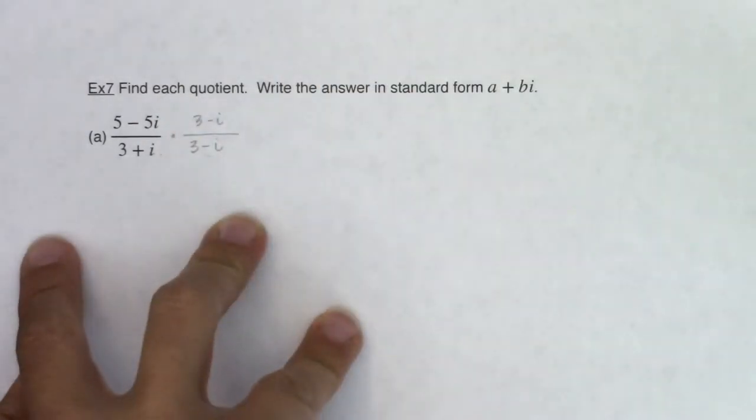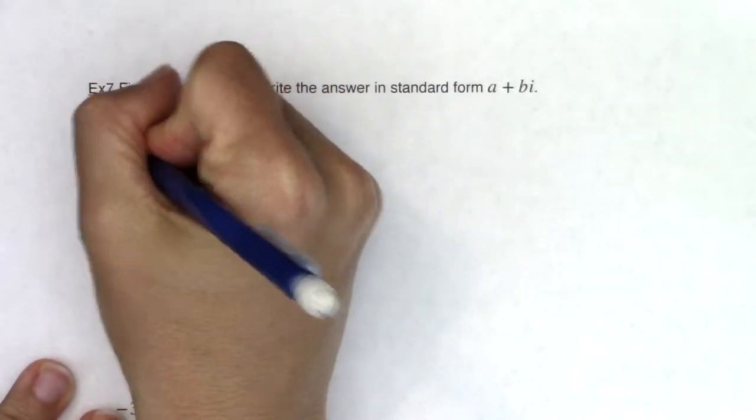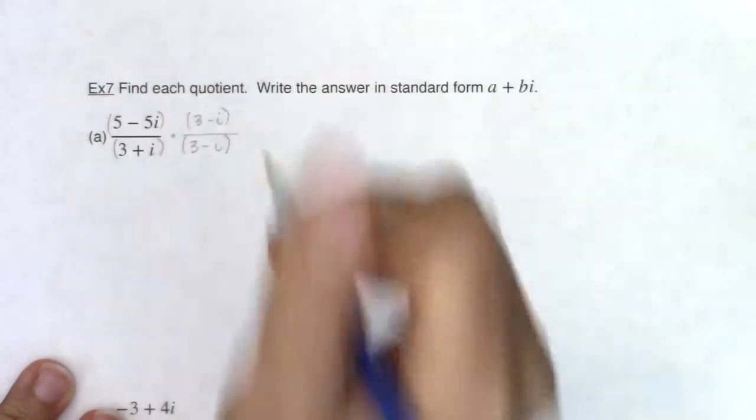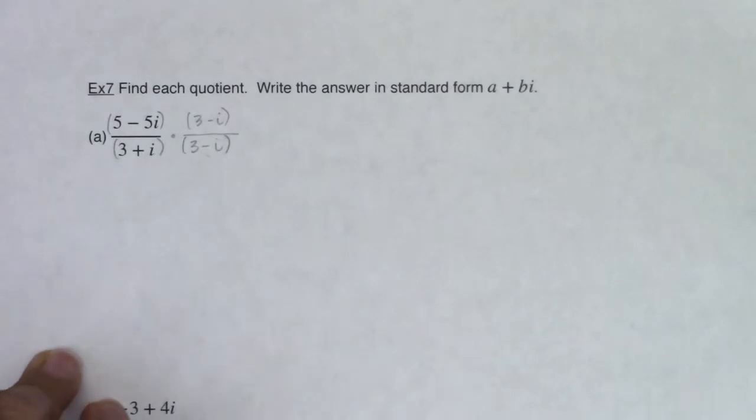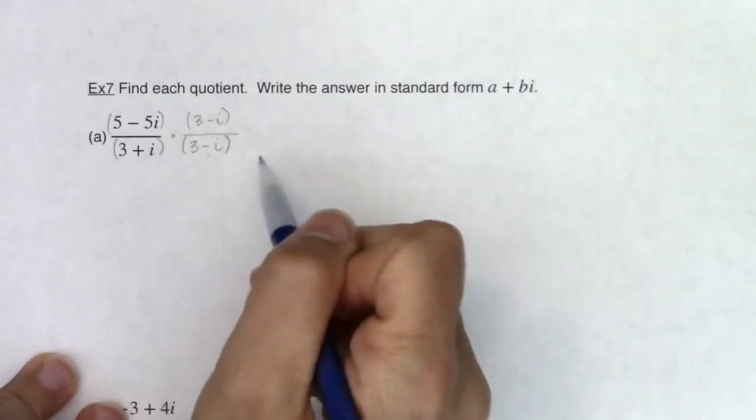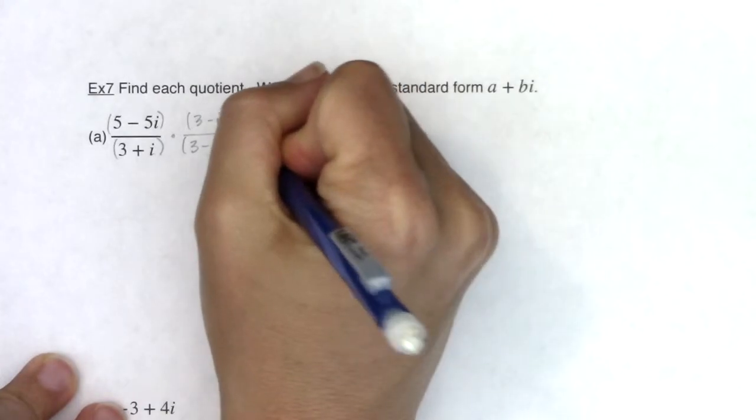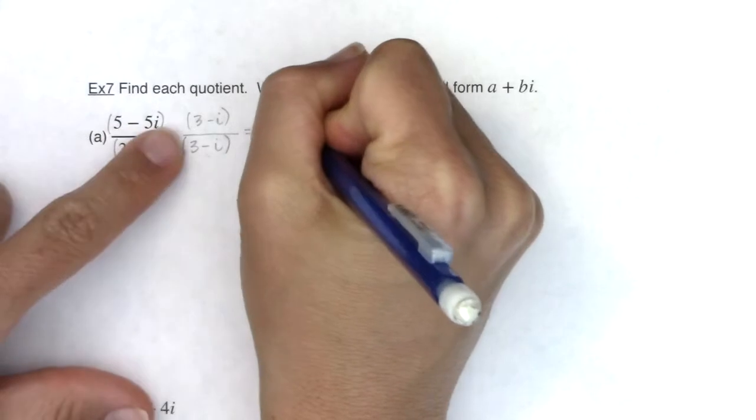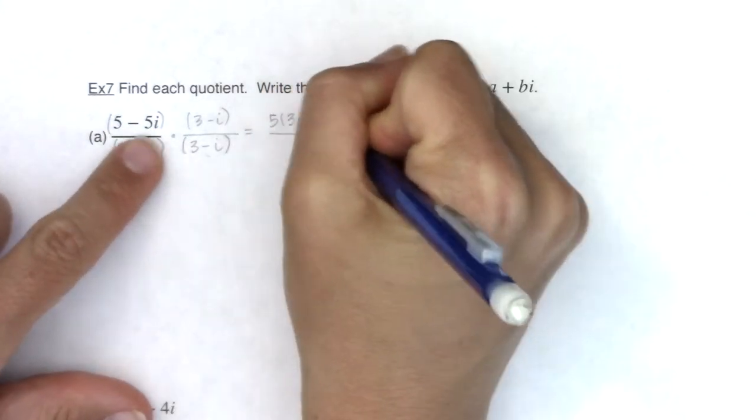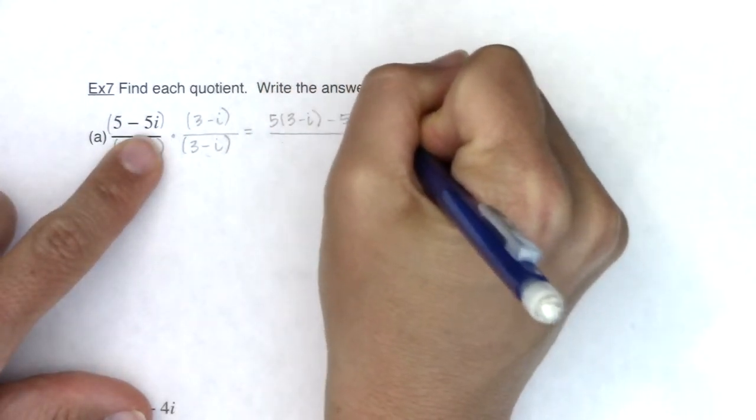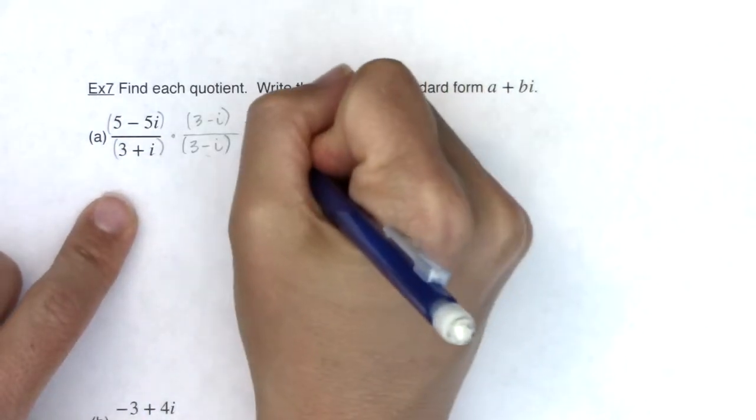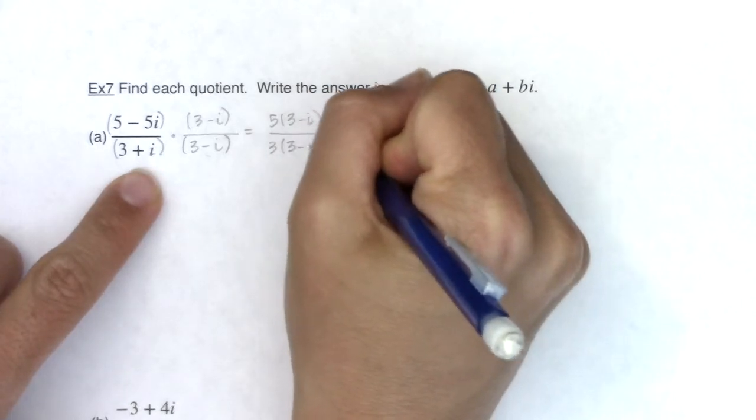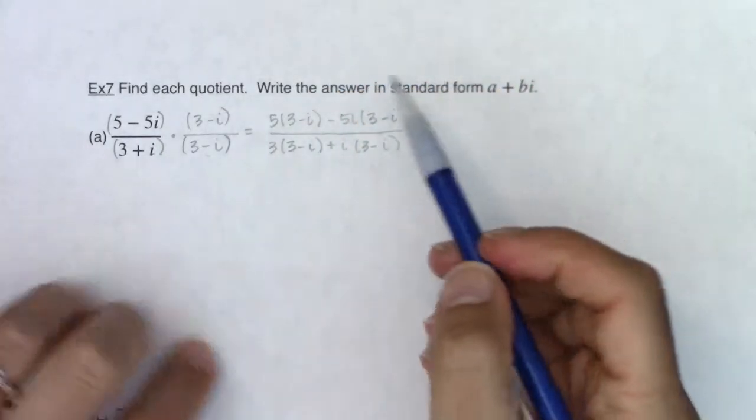So let's go ahead and multiply these out. With any fraction, if you have binomials or any nomials in the numerator and denominator, they're protected by parentheses. So let's make sure we're paying attention to those. If you want to FOIL, go for it. You know me, I'm going to double distribute. So let's take a look at our numerator. I have 5 being distributed to 3 minus i, and I have negative 5i being distributed to 3 minus i. In the denominator, I have 3 getting distributed to 3 minus i, and then i being distributed to 3 minus i.